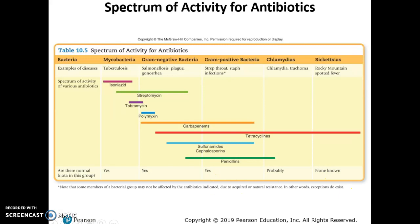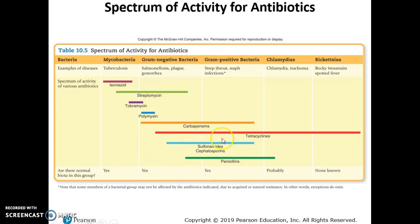That's what is meant by broad spectrum versus narrow spectrum. You do have gram-negative and gram-positive bacteria as part of your normal flora, so if you take a tetracycline, there's a good chance you're actually going to kill off a lot of your normal flora. You want to try to minimize the amount of good bacteria that you kill when you're trying to treat an infection.